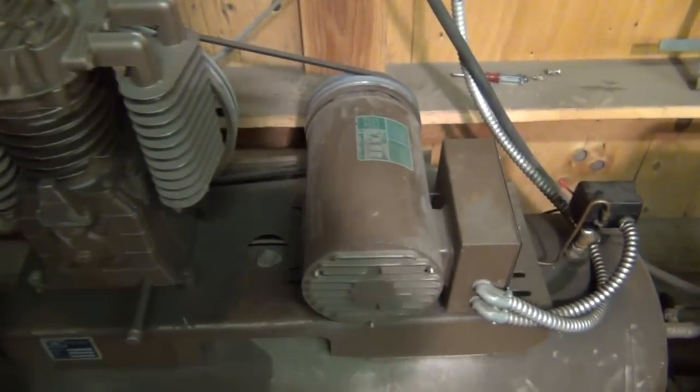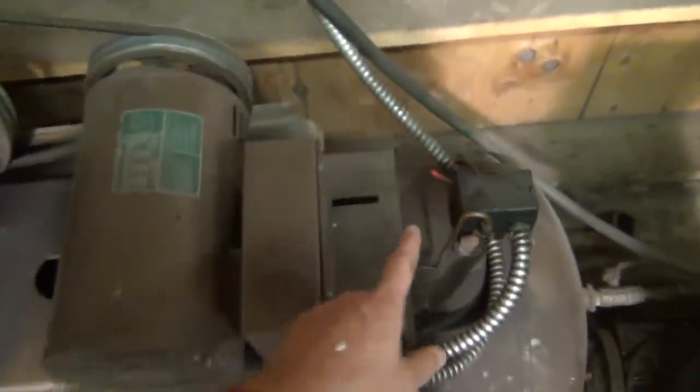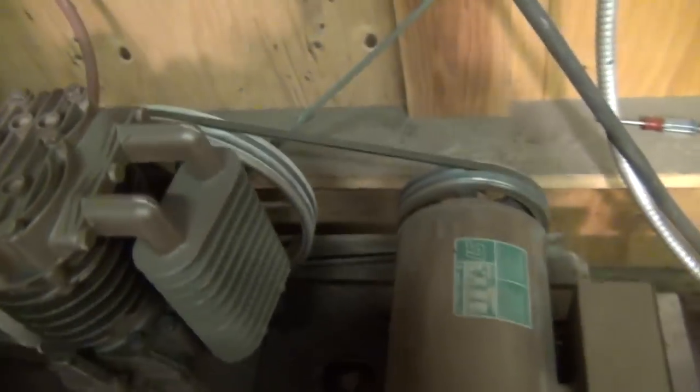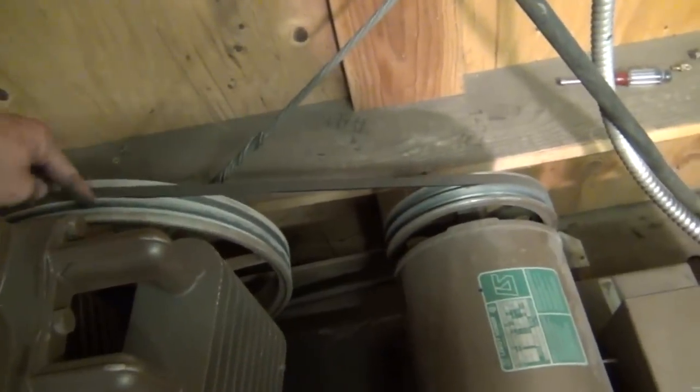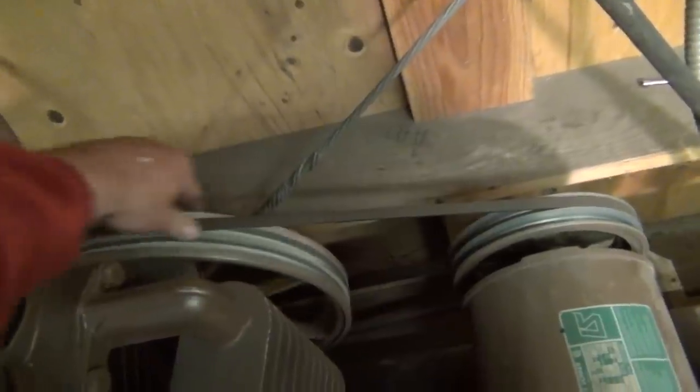Alright, now I have turned the circuit breaker back on so there is power to the magnetic contactor, but I turned the pressure switch off right here so the compressor wouldn't be trying to start up. I have also removed the belt pulley guard, and the first thing I'm going to do is just turn this thing over by hand and make sure there's no mechanical binding or anything like that that's keeping the machine from turning.